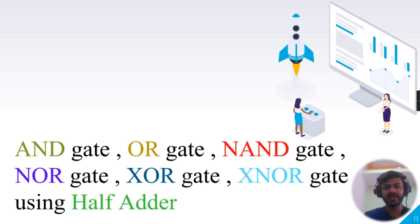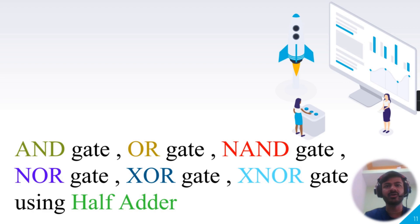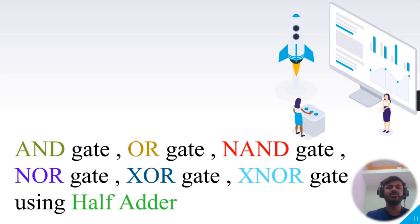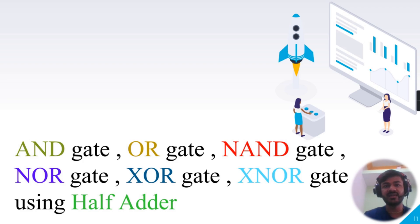Hello everyone, welcome to the channel Technospot. This is Harish Gavpallet. In this video, I'm going to tell you how we can implement all our basic logic gates — such as AND, OR, NAND, NOR, XOR, and XNOR gate — by using a half adder. To implement all these logic gates, we are going to use the logical expression and truth table of all the logic gates, as well as the logical expression and truth table of the half adder.